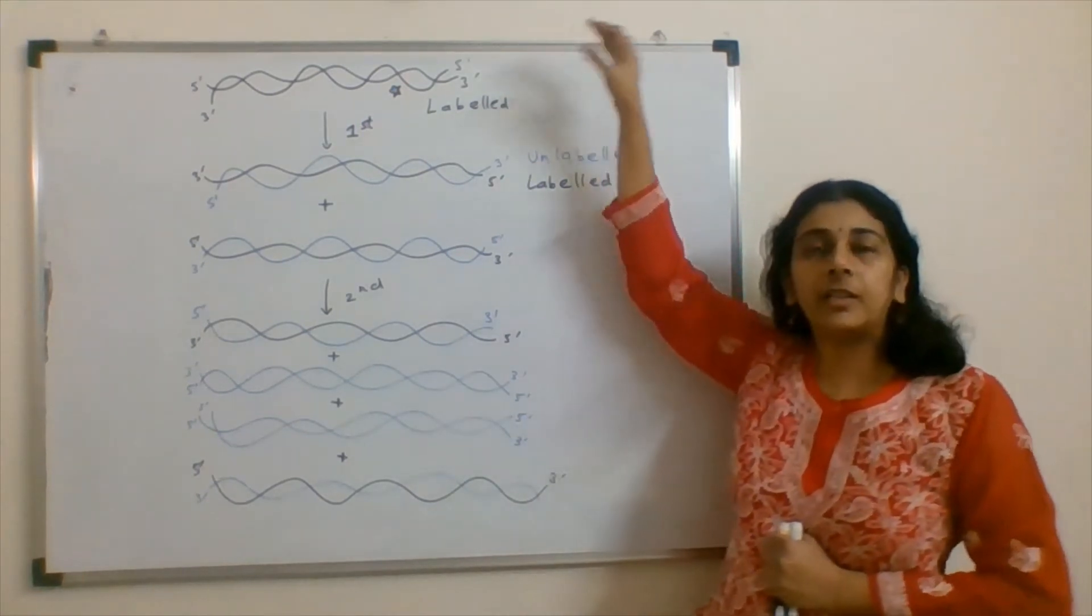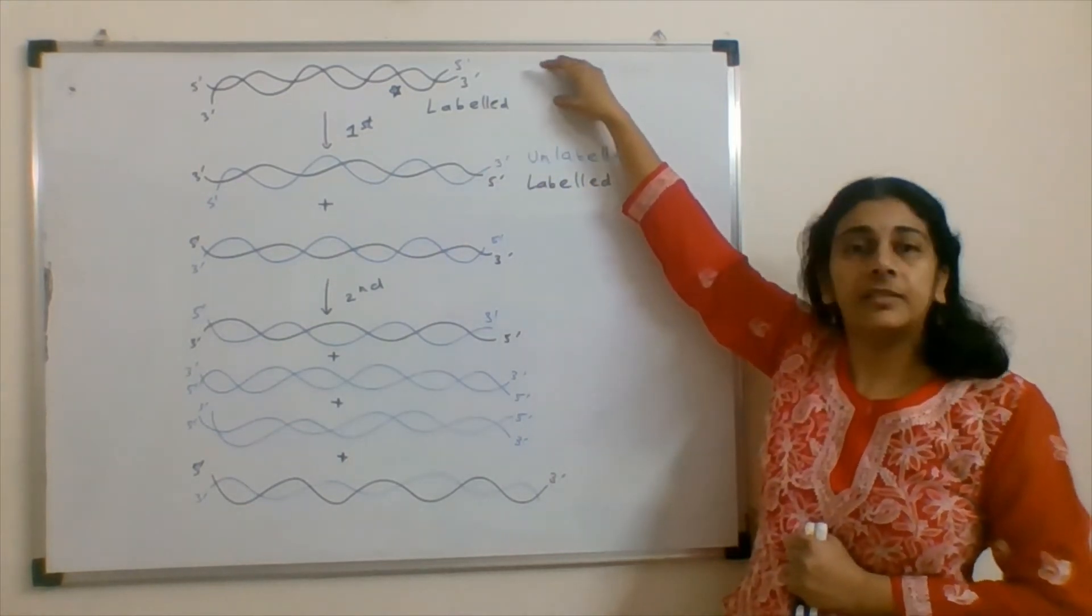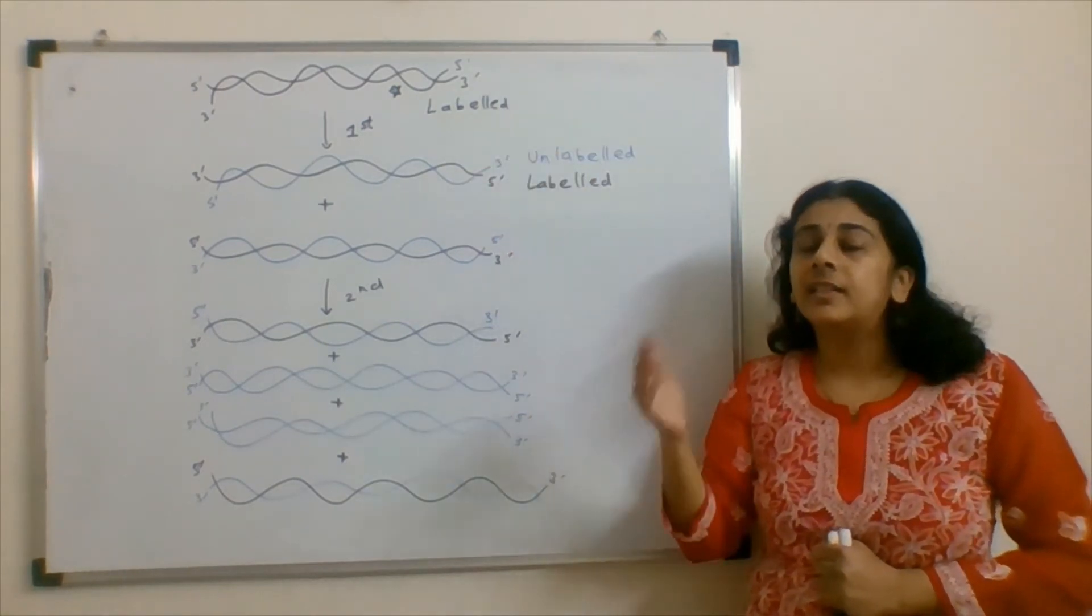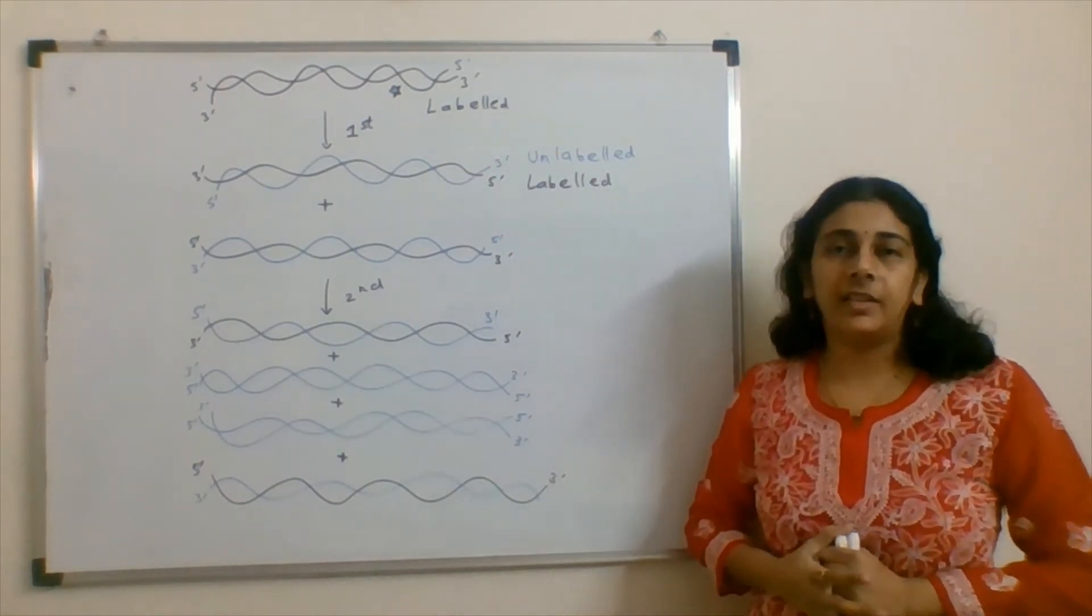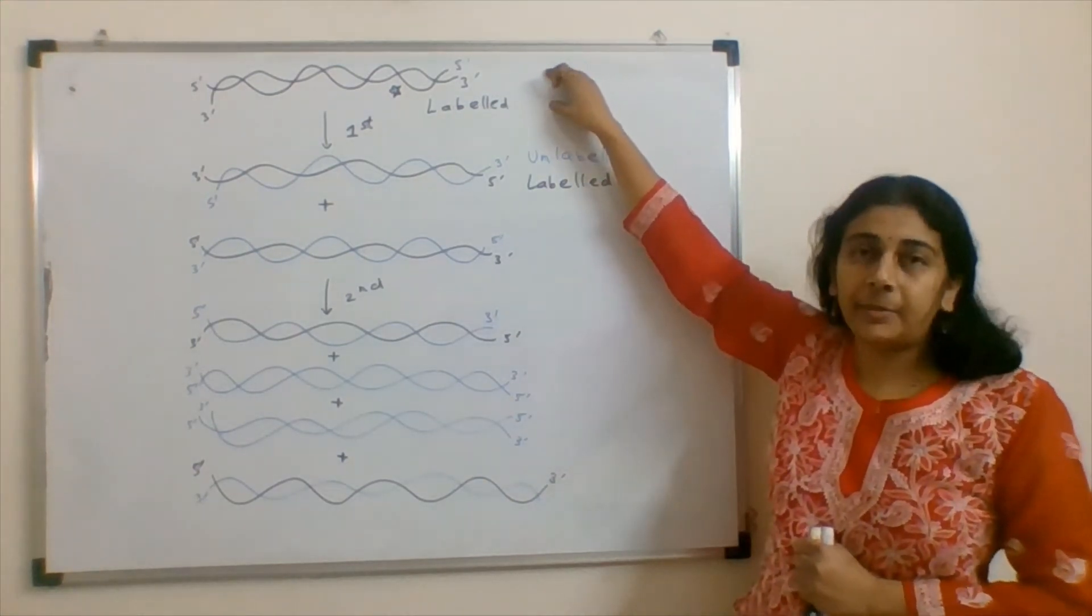If we see here, according to the question, we have taken thymine labelled DNA and it is now duplicated in thymine unlabelled media. This is a labelled DNA, black coloured.